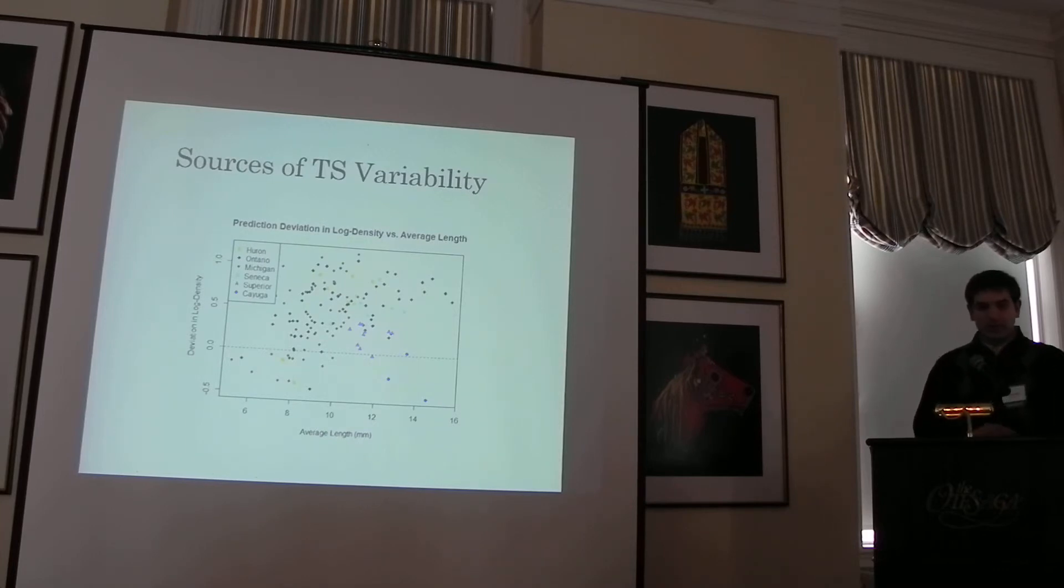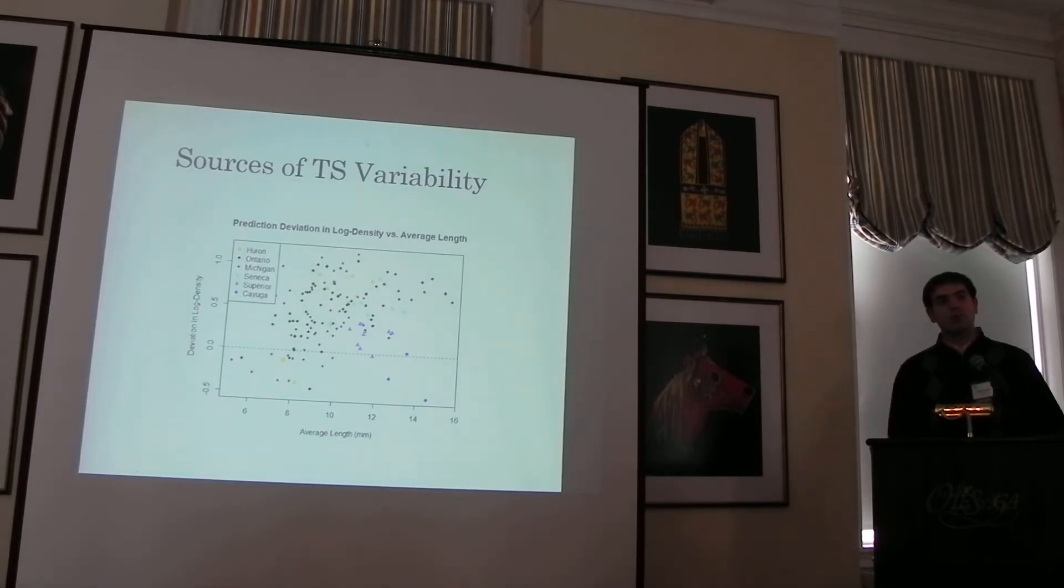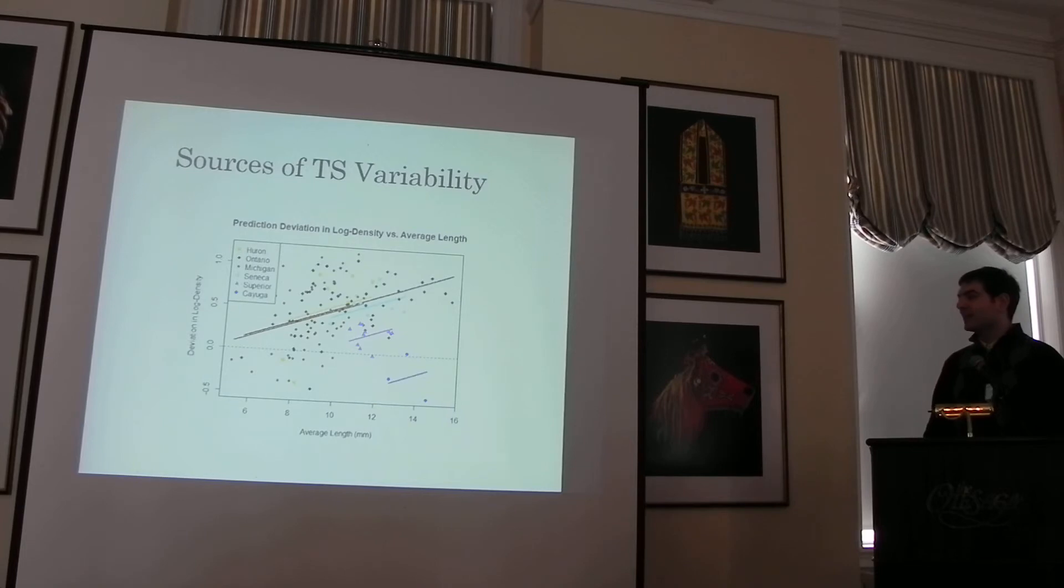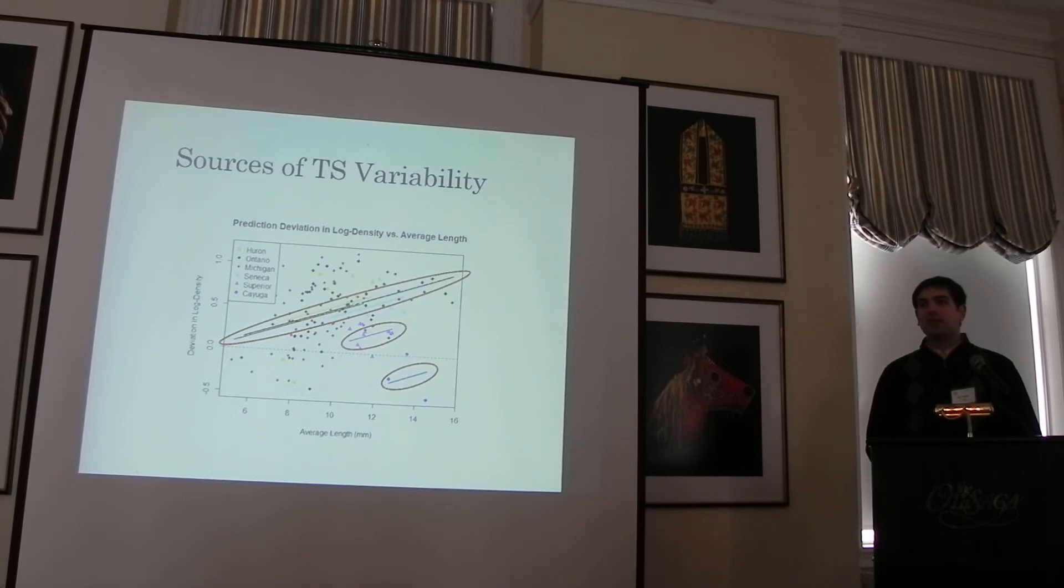I also took a look at the deviation in target strengths versus the average length. Except here, what I have is the expected number of mysids predicted from the model. What that would do, rather than the other version, is account for the non-linearity in the relationship between mysid size and target strength. So you would expect this to be a tighter fit. The same work actually got a slope going in the other direction, but you still see the same separation of those two groups. So that's an interesting result that seems to be consistent across different ways of looking at the data.